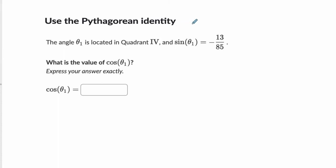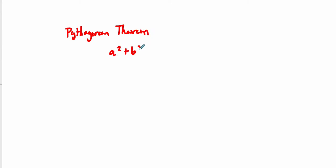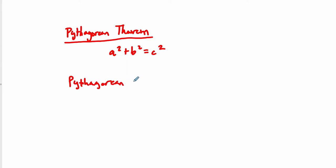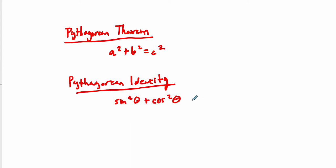The Pythagorean identity is based on a² + b² = c². The Pythagorean theorem says that if you have a right triangle, one leg squared plus the other leg squared is always equivalent to the hypotenuse squared. What we're able to do with Trigonometry is extend this theorem beyond right triangles — and we call it the Pythagorean identity. It's written as sine squared of an angle plus cosine squared of an angle equals one.